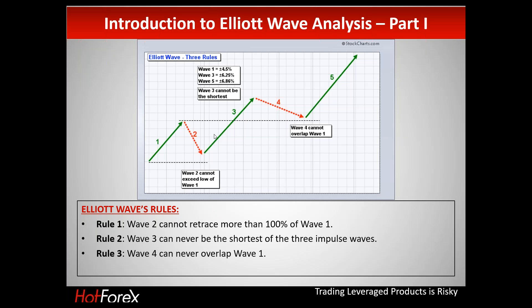Rule number four: as soon as wave three reaches its end and we see a correction — a pullback — we need to measure this pullback. Wave four must never move below the peak of wave one. If wave four goes below the peak of wave one, then this means that you don't have Elliott Wave. If any of these rules is broken, then you don't have Elliott Waves.